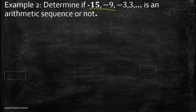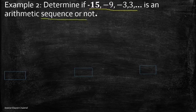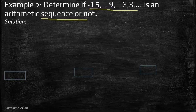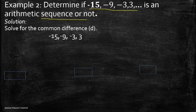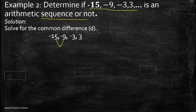Now let's have example number two: determine if -15, -9, -3, 3, and so on is an arithmetic sequence or not. Same process as example one — we have to solve first for the common difference. Actually, even without a full solution we can easily determine the common difference. We just subtract a term by its preceding term: negative 9 minus negative 15 equals positive 6.